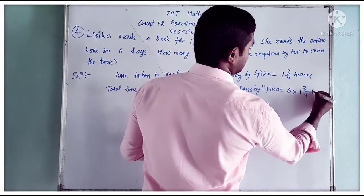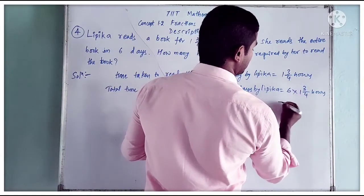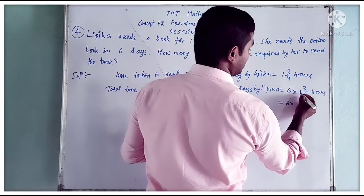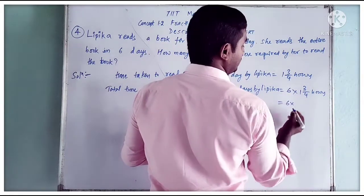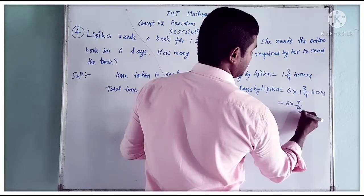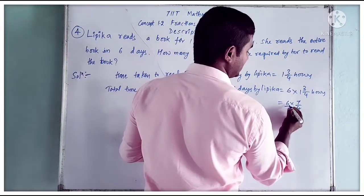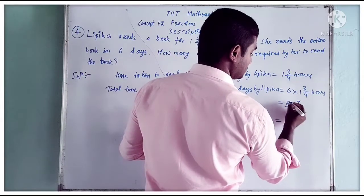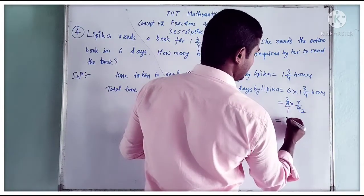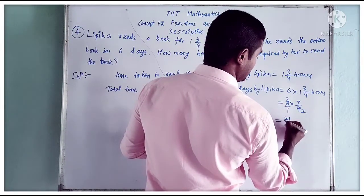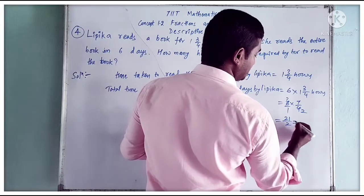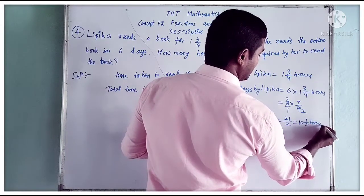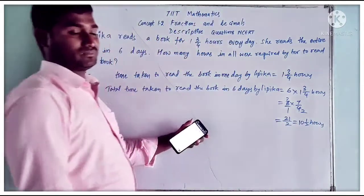So 6 into 1 and 3 by 4. Convert the mixed fraction: 4 ones are 4, plus 3 equals 7 by 4. Write 6 as 6 by 1. Check for cancellation: 2 cancels from 6 and 4, giving 3 into 7 equals 21 by 2. In mixed fraction, that is 10 and 1 by 2 hours, or 10 and a half hours.